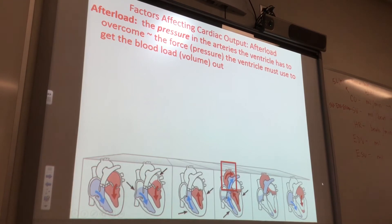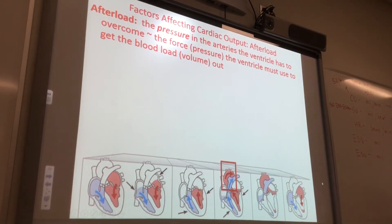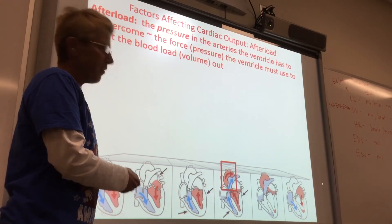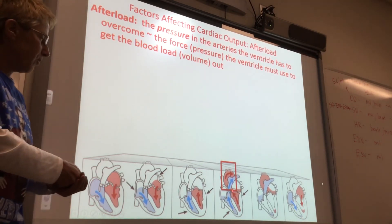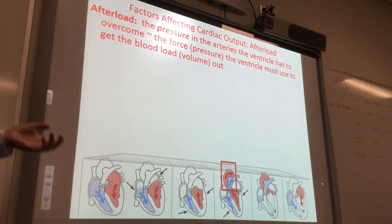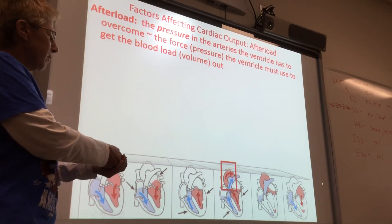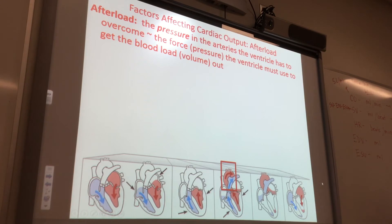Afterload is the pressure in the arteries. You've seen this cartoon before when we did the cardiac cycle. Afterload is the pressure associated with the arteries — that's the pressure the ventricle has to overcome to pump the blood out. Remember, the intraventricular pressure has to be greater than the inter-arterial pressure in order for the semilunar valves — pulmonary and aortic — to open. Because there's a volume of blood in those arteries, that volume is associated with pressure, and now we're giving that pressure a name: afterload. So now we have preload and afterload.